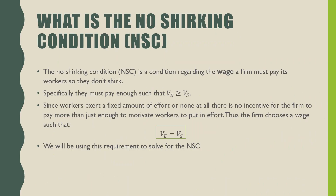So, what is the no shirking condition? The no shirking condition is a condition regarding the wage a firm must pay its workers so that they don't shirk. Specifically, they must pay enough such that the value of being employed is greater than or equal to the value of shirking. Since a worker exerts a fixed amount of effort or none at all, there is no incentive for the firm to pay more than enough just to motivate the workers to put in their effort. Thus, the firm chooses a wage such that the value of putting in effort is equal to the value of shirking. This will be used as a requirement for solving the no shirking condition.